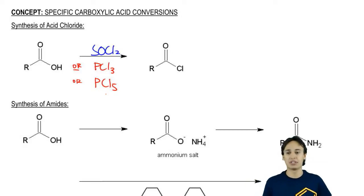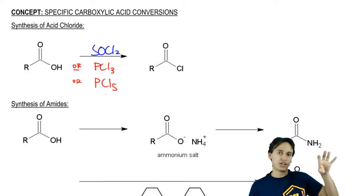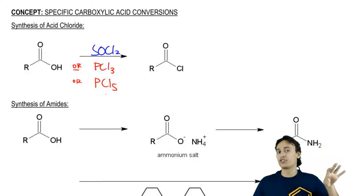This is helpful for us synthetically because once you have an acid chloride, you can turn that into any other derivative because of how reactive it is in very high yield.